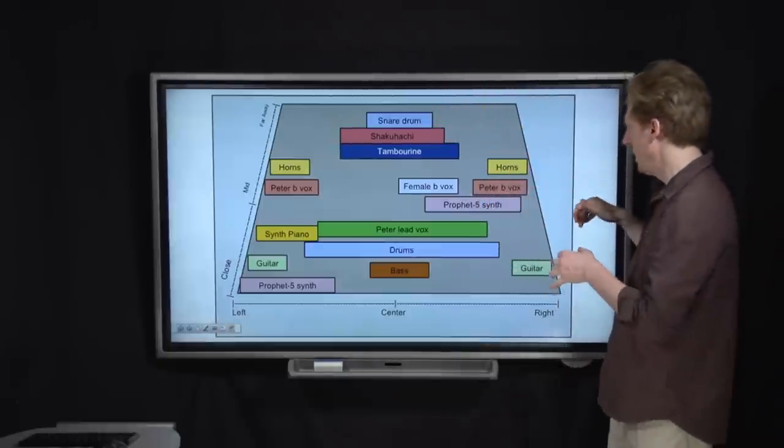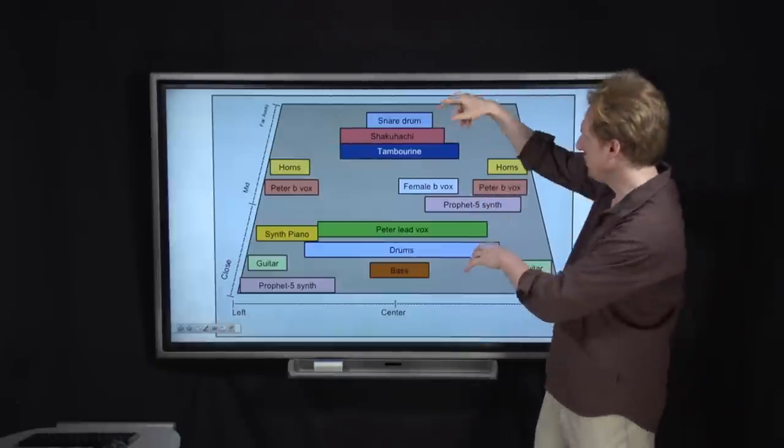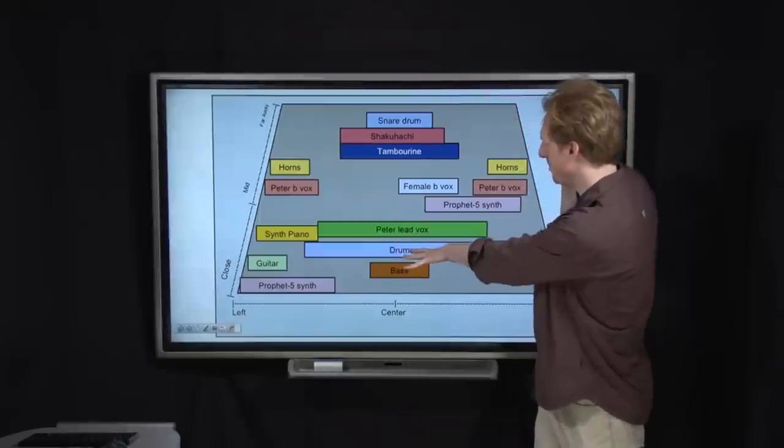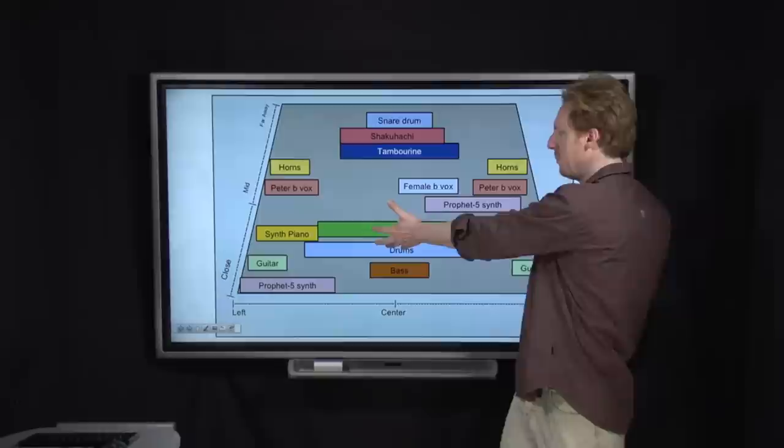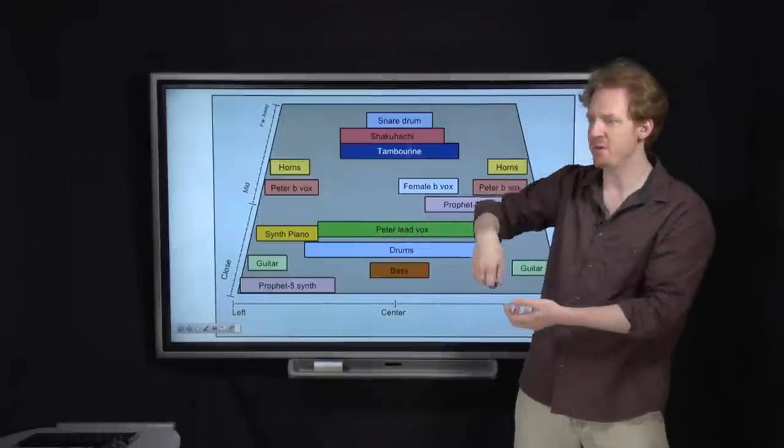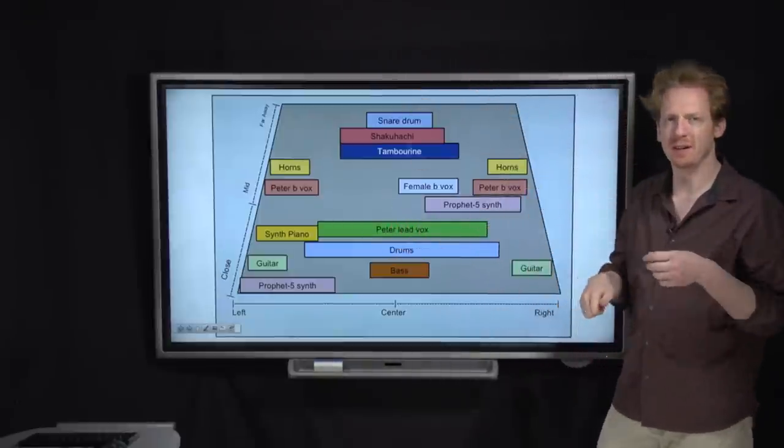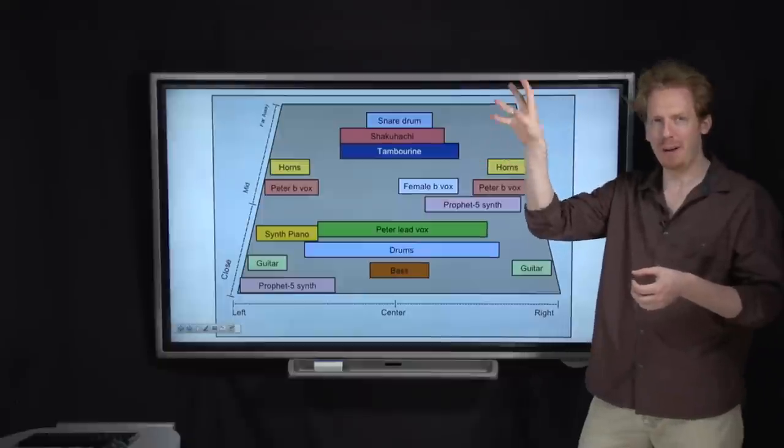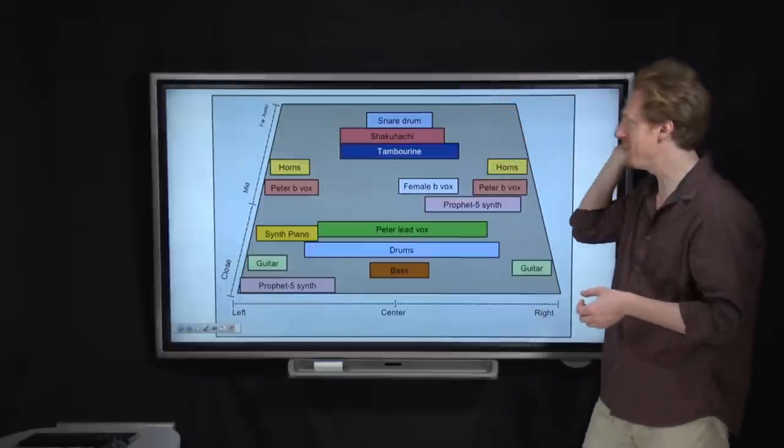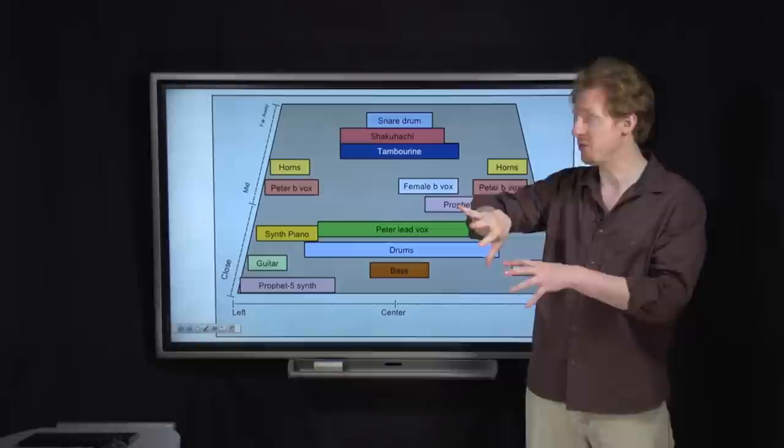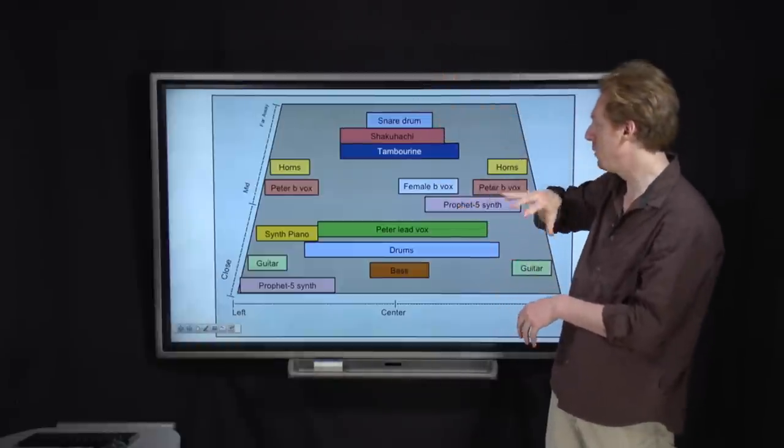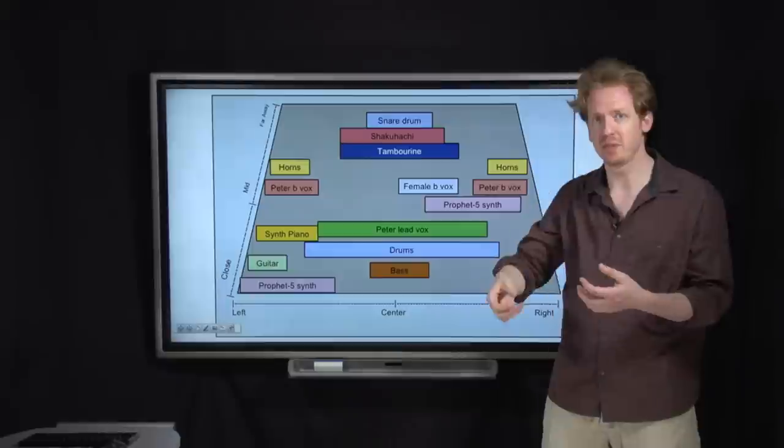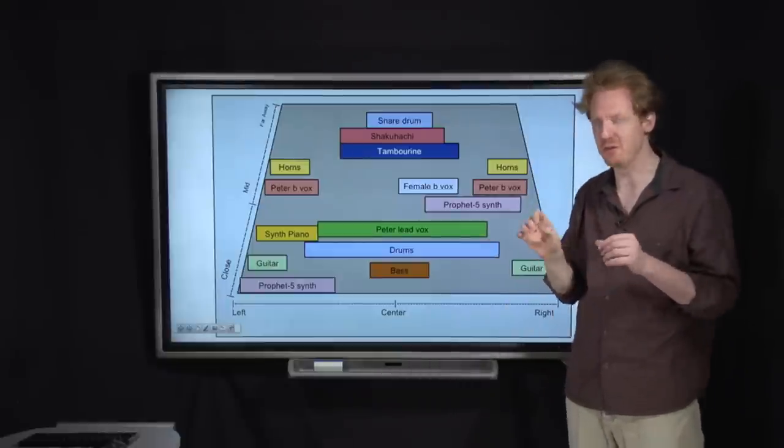So what you'll see here is the drums in general are up pretty close, except for the snare drum, the one that goes bah. So in the beat, like doom, bah, doom, bah, the bah is the snare drum. And the snare drum has a ton of reverb on it. So that's why I placed it all the way in the back, whereas the rest of the drums are pretty dry. And we're going to be talking more about that snare drum reverb in a second.